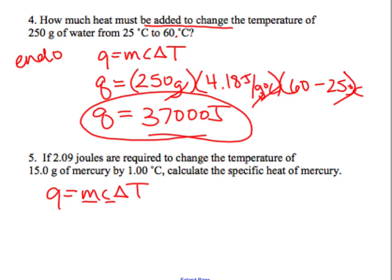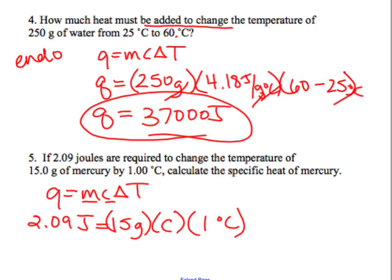So looking at this, we are going to calculate the specific heat. 2.09 equals 15 grams times C times one degree. So 2.09 divided by 15 equals 0.139 joules per gram degree Celsius. And I am going to kind of be on you about units on this, I need units on there.